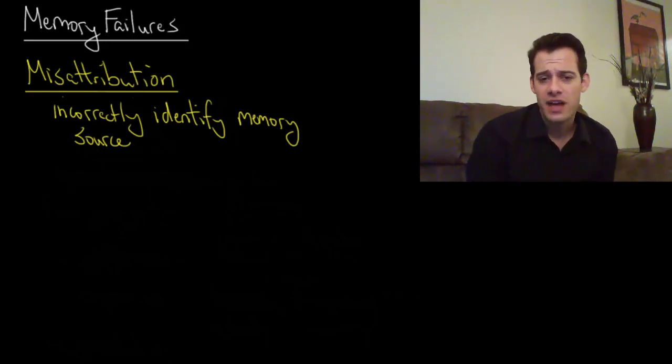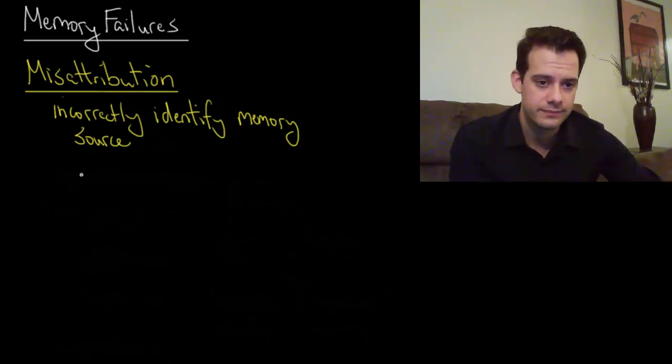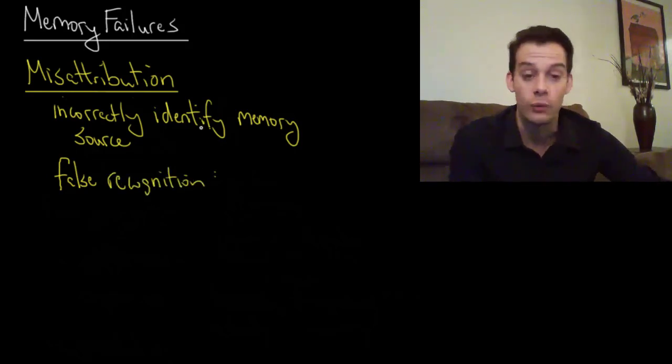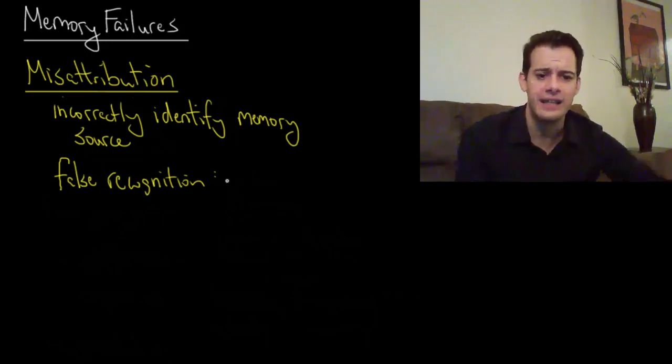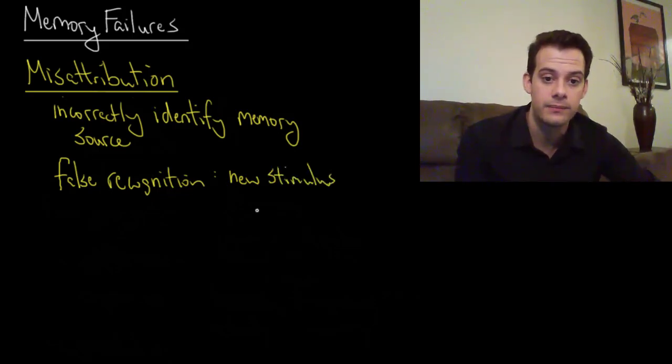Another way that misattribution can occur is that we can have false recognition. So this refers to the idea that we think we recognize something when in fact we don't. So the idea is that it's a new stimulus but it's similar to an old stimulus that we've already seen. So we think that we recognize it.